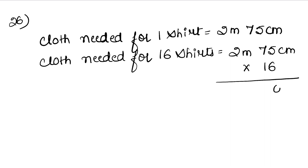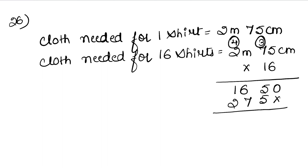Let's calculate: 6 times 5 is 30, carry 3. 6 times 7 is 42, plus 3 is 45, carry 4. 6 times 2 is 12, plus 4 is 16. Then multiplying by 1: we get 275. Adding the partial products: 0, carry 1. 7 and 7 is 14, carry 1, giving 4.